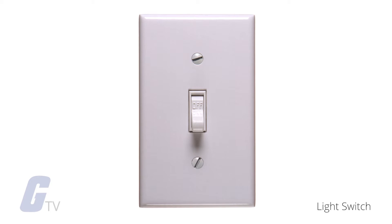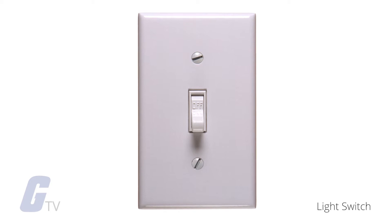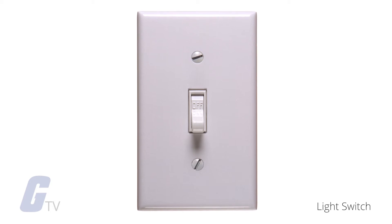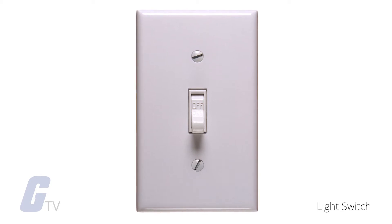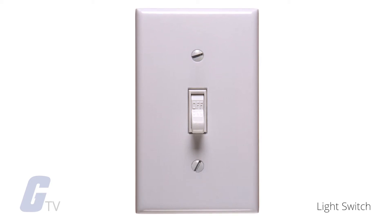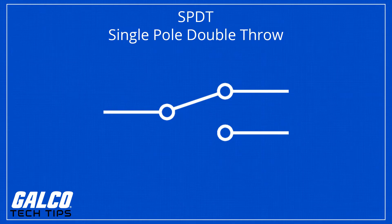This type of switch is commonly used for simple tasks, such as a light switch. Next is the single pole, double throw or SPDT.